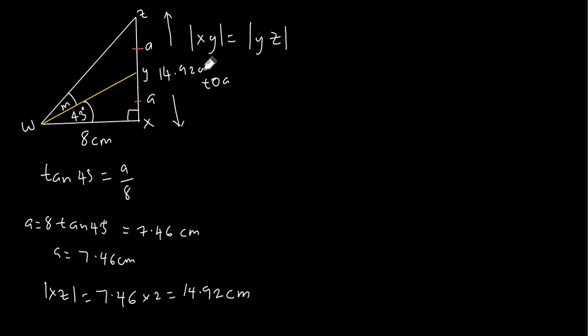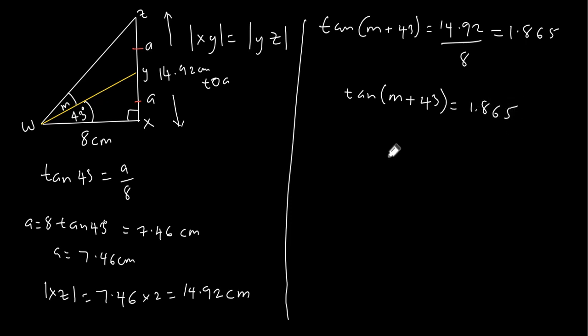So now from here we have 14.92 centimeters. Now let's consider the whole triangle which is WXZ, so we have the tan of the angle here which is m plus 43. m plus 43 is equal to 14.92 divided by 8, and this is equal to 1.865.